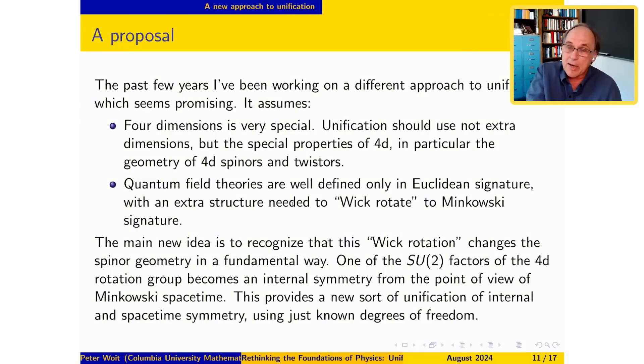So anyway, so the main idea, the main idea is to say what I'm trying to do is to claim that this Wick rotation, if you think about your geometry in terms of spinors, it changes the geometry, the spinors in a very fundamental way, that the geometry of spinors in Euclidean signature and the geometry of spinors in Minkowski's signature is actually quite different. And the basic idea, this is the idea that I had going way back, which I didn't think could work, but which I'm now convinced does, is that in the four-dimensional rotation group, I'll say more about it, but it breaks up into two SU(2) factors.